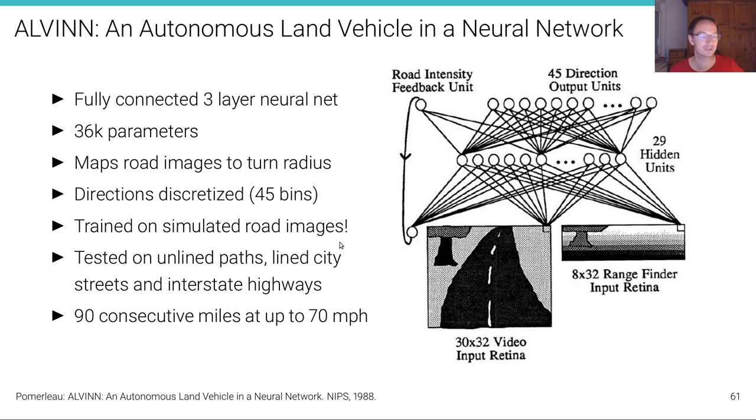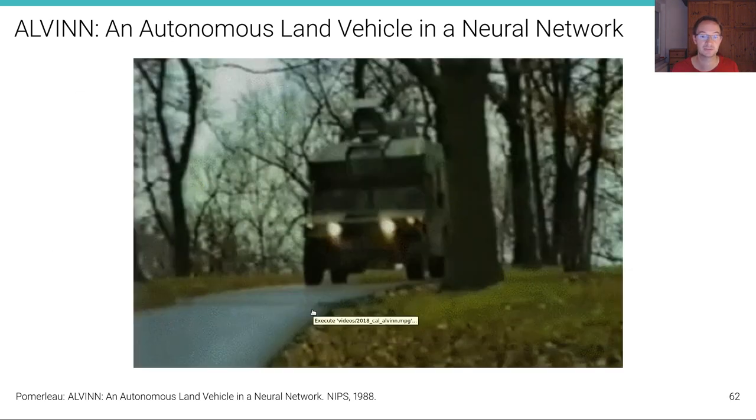It was trained on simulated road images, much like we train neural networks these days as well. And it was tested on unlined paths, line city streets and interstate highways. I was able to drive 90 consecutive miles at up to 70 miles per hour. This was really a seminal demonstration. I'm not going to show you the video again. You have seen it already.